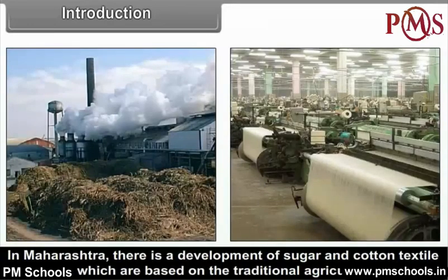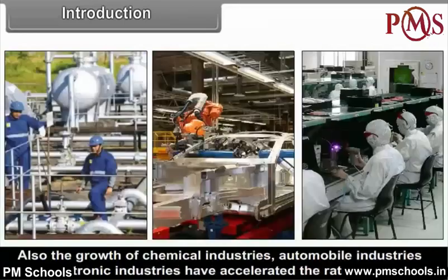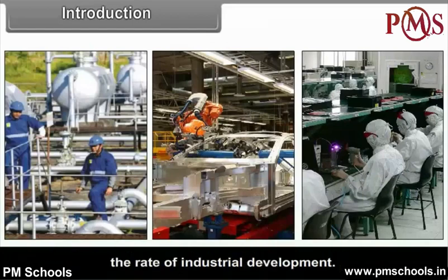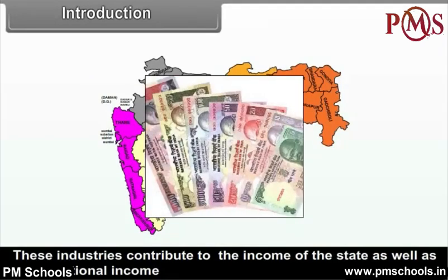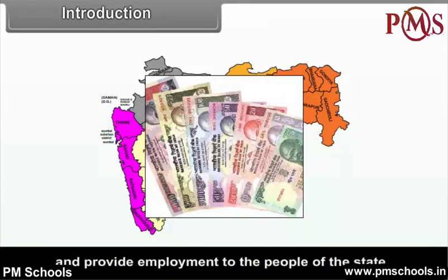In Maharashtra, there is a development of sugar and cotton textile industries which are based on the traditional agricultural produce. Also, the growth of chemical industries, automobile industries and electronic industries have accelerated the rate of industrial development. These industries contribute to the income of the state as well as to the national income and provide employment to the people of the state.